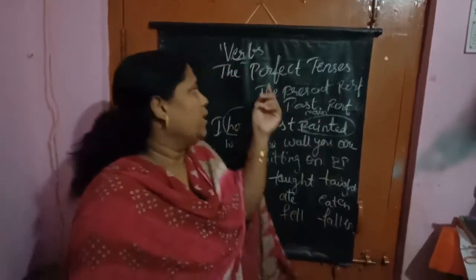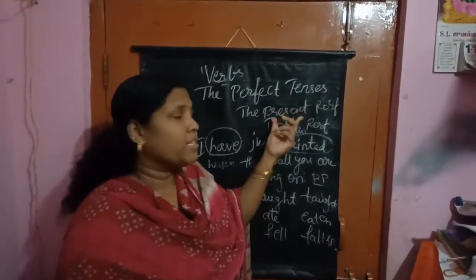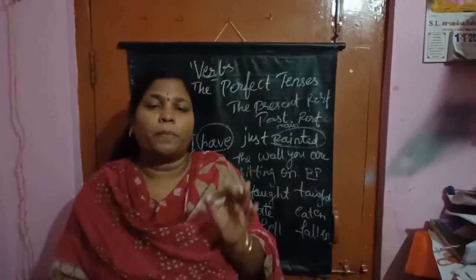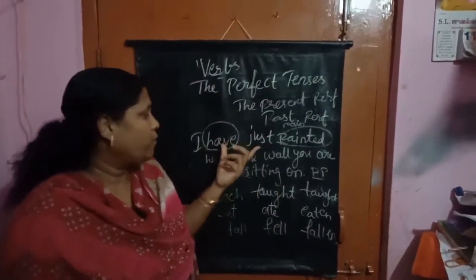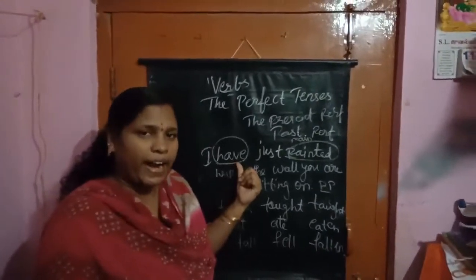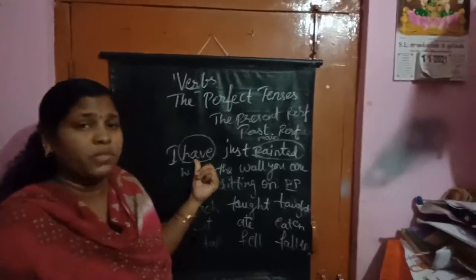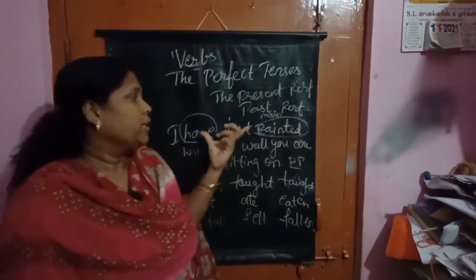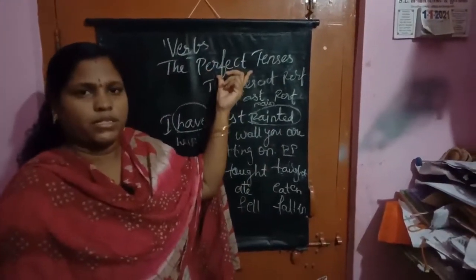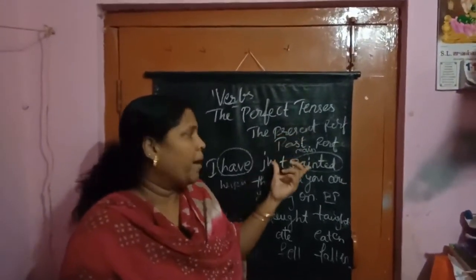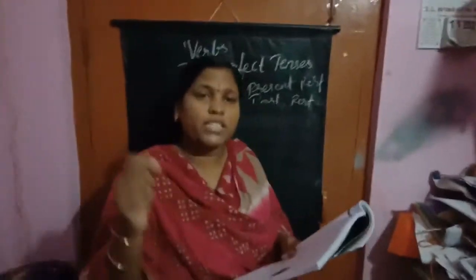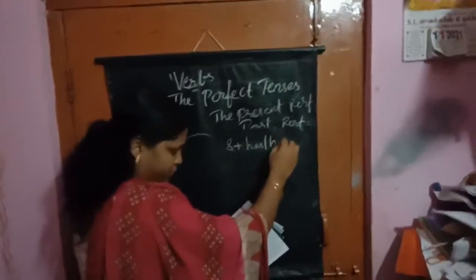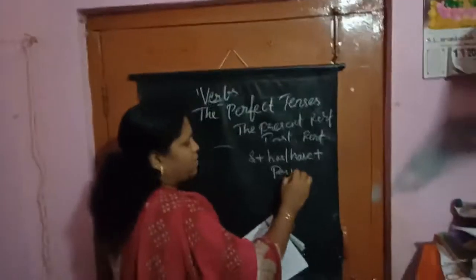Now we are going to learn about the perfect tense — present perfect tense and past perfect tense. The rule for present perfect tense: first, the subject, plus we will write has or have, plus past participle form of verb, plus object. We will see the example first. When we talk about things that have happened till the moment of speaking, it is not very important when they happen.